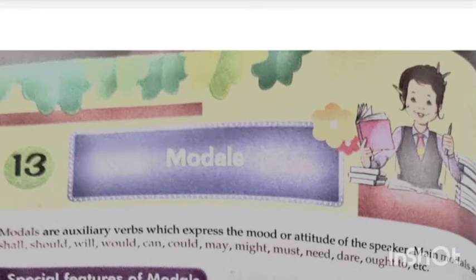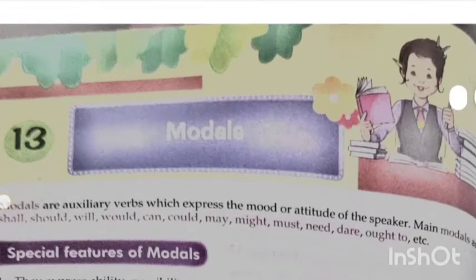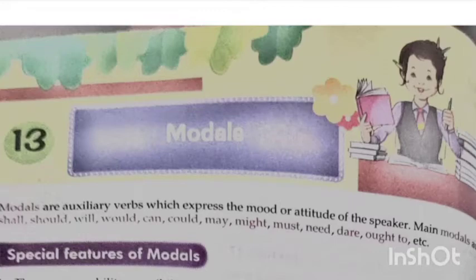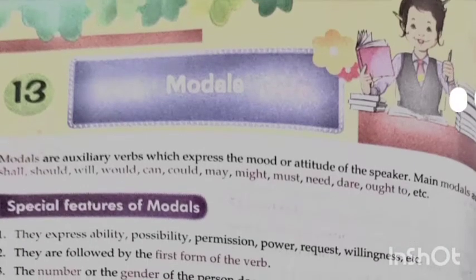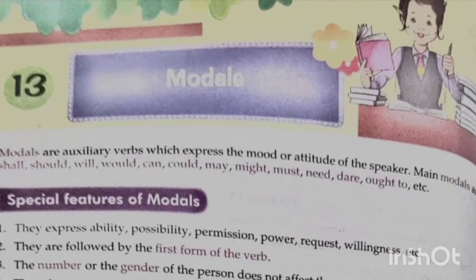Welcome, students. Today we are going to see modals. We have learned two types of verbs: one main verb and one auxiliary verb. Auxiliary verbs are of two types — primary auxiliaries: is, am, are, was, were, has, have, had — and modal auxiliaries.